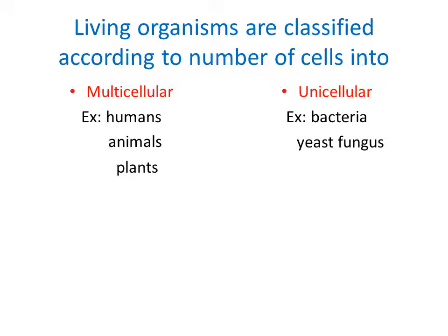The cells of living organisms are divided according to the type of living organism. We have multicellular living organisms, where the body consists of a number of cells, like humans, animals, and plants. And in some types, the whole body consists of one cell, which is called a unicellular living organism, like bacteria and yeast.